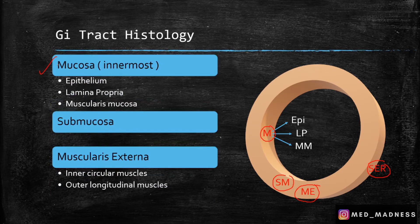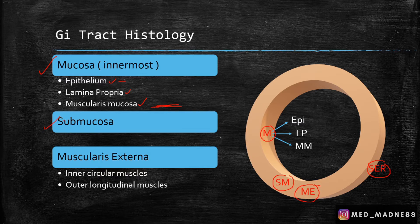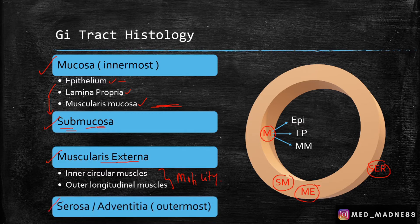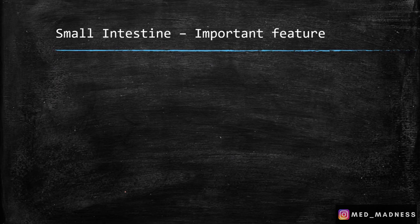The mucosa is the innermost layer of the GI tract. Here you can see the epithelium where you can see cells like squamous cells, columnar cells, etc., then comes the lamina propria, and then the muscularis mucosa — this marks the boundary of the mucosa. Then the submucosa, which means beneath the mucosa. Then the muscularis externa, where you have circular and longitudinal muscles that help with the motility of the GI tract.